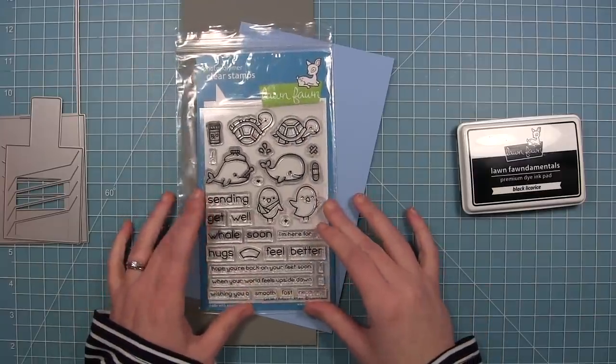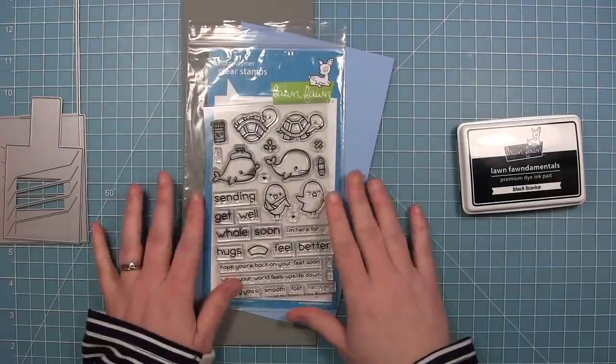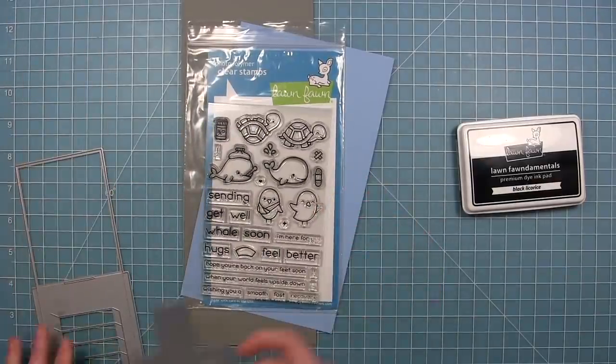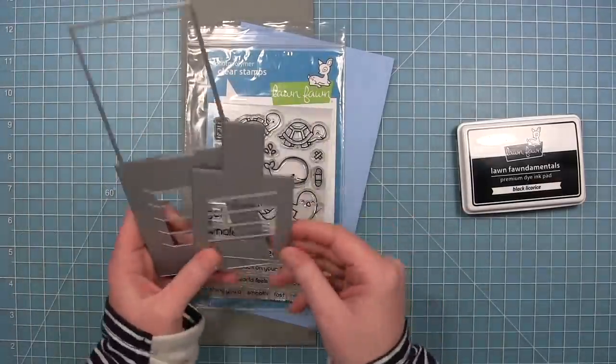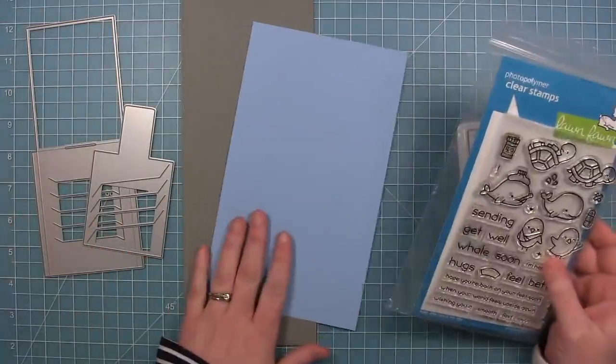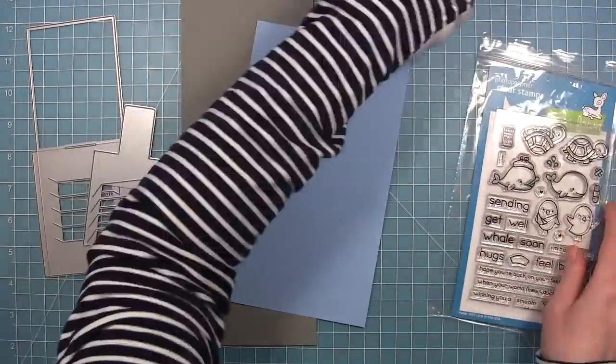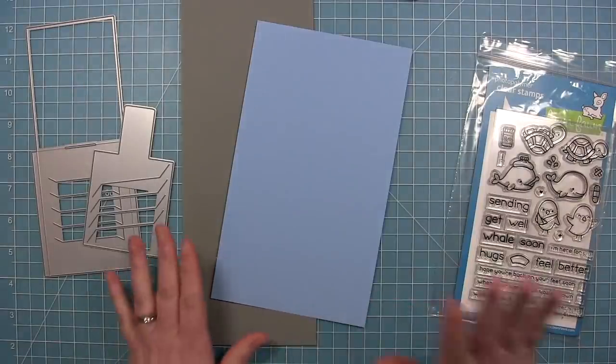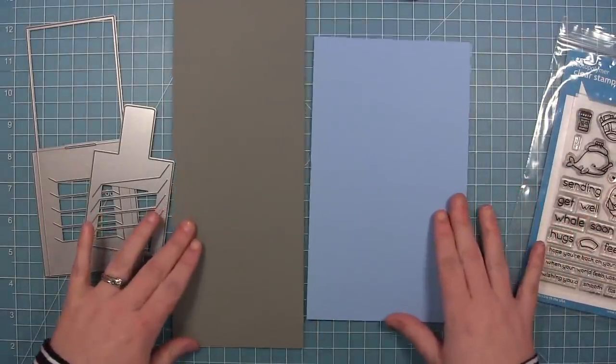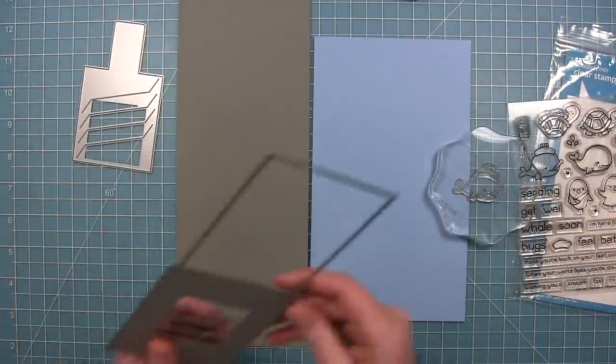So the first thing I'm going to do is start by stamping out my images on the colored paper. I'm using the get well before and afters. Here's my magic picture-changer dies that I'm going to be using. Because I'm using colored pencils, I want to stamp my images first and color them and then use the dies to cut them out.